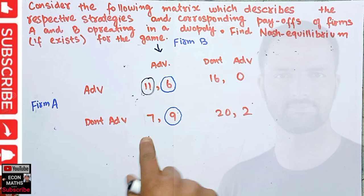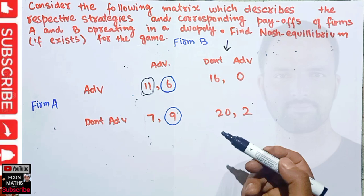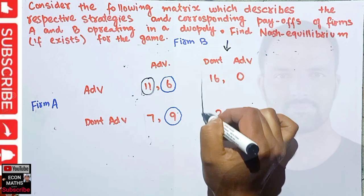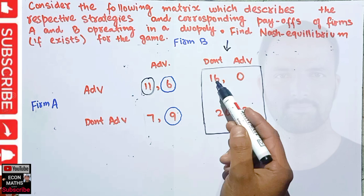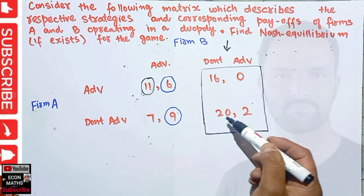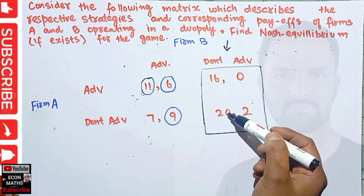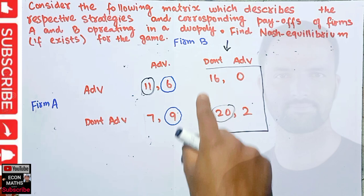Now, what if Firm B chooses not to advertise? Firm A has two options: advertise or not advertise. By advertising, Firm A gets a payoff of 16; by not advertising, Firm A gets a payoff of 20. Since 16 is less than 20, Firm A will choose not to advertise.